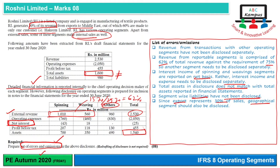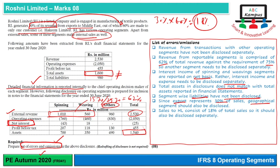Uske baad hum dekhte hai ki 30% ka 60% yae ban jayega 18%, so 10% se upar agar kisi ko sale ho rahi ho to that is called a major customer, aur major customer ka disclosure dena hota hai. So yeh separate disclosure nahi diya gaya. Disclosure note ke andar iska koi indication nahi hai. Hakeem Limited ka naam likha tha to isko separately disclose karna chahiye tha.